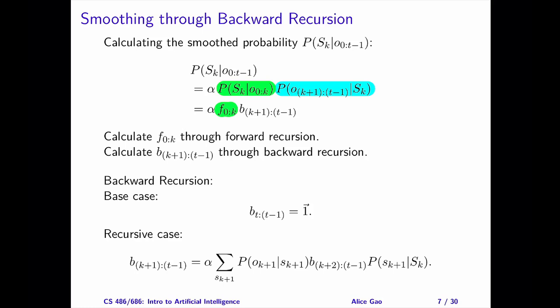Let's define the second probability as a message called B for backward recursion. The subscript k plus 1 to t minus 1 indicates the sequence of observations in the probability. Backward recursion passes the message B from the last time step, k equals t minus 1, back to the first time step, k equals 0.